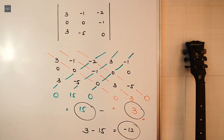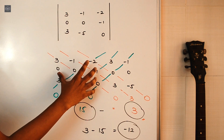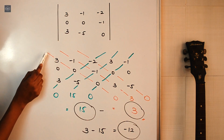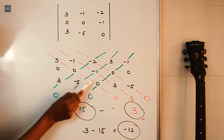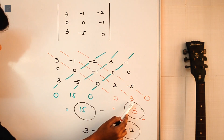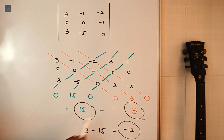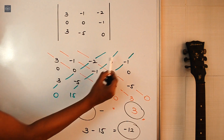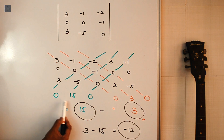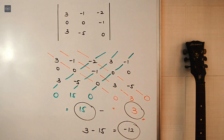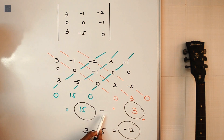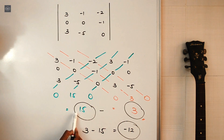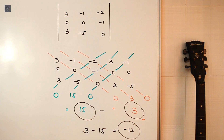Let me do a quick revision. First, take all the elements and write them out, then repeat the first two columns. Mark all elements along the forward diagonals, multiply them, and write the products, then add them to get the first sum. Then go the other way, mark elements along the backward diagonals, multiply, and add to get the second sum. Finally, subtract the second sum from the first: 3 minus 15 equals -12. That's our final answer.